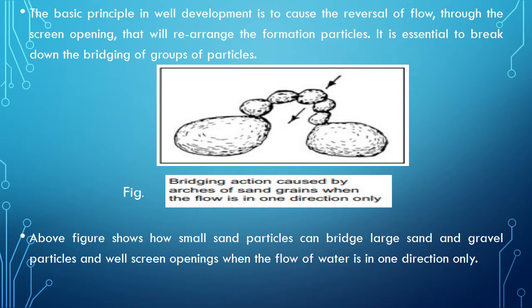It is essential to break down the bridging groups of particles. In this figure you can see bridging action caused by arches of sand grains when the flow is in one direction only. In the case of well development, when the flow takes place in the reverse direction, this bridge can be broken down. Whatever small particles are present, they may come inside the tube well, and by using different pumps, such particles can be withdrawn from the well.